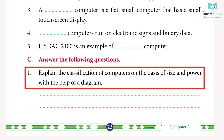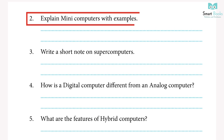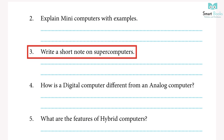Exercise C — Answer the following questions: 1. Explain the classification of computers on the basis of size and power with the help of a diagram. Answer: do it yourself. 2. Explain minicomputers with examples. Answer: minicomputers are more expensive and more powerful than microcomputers. It is a multi-threaded system. Minicomputers are used in industries and for scientific purposes. Example: PDP-8.